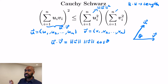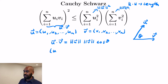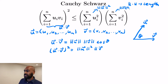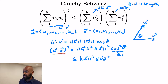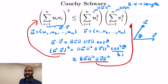On the right-hand side, the sum of the squares of the U_i's is the square of the length of U, and the sum of squares of the V_i's is the square of the length of V. Squaring both sides of the dot product relationship gives U·V squared equals ‖U‖² · ‖V‖² · cos²θ. Since cos²θ ≤ 1, this quantity is bounded above by ‖U‖² · ‖V‖², which is precisely the right-hand side of Cauchy-Schwarz.